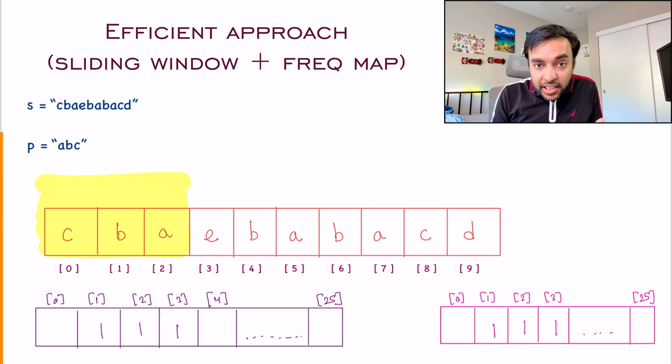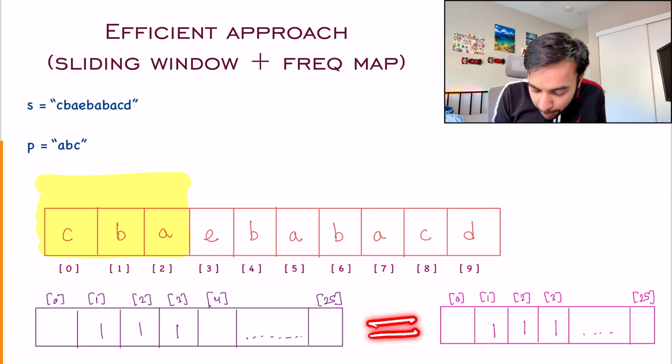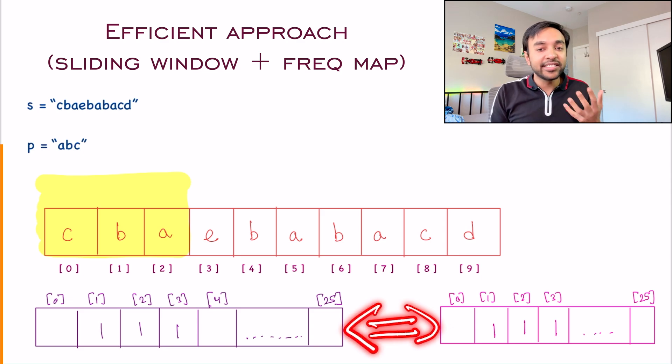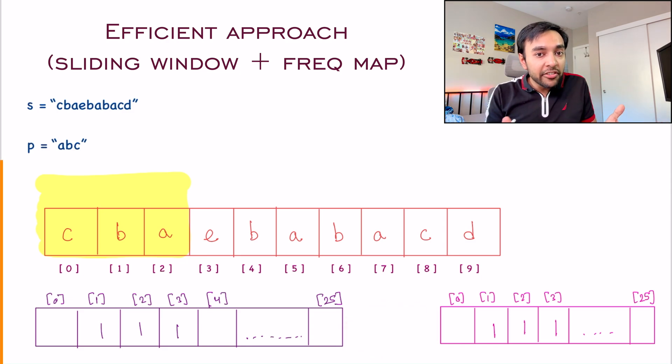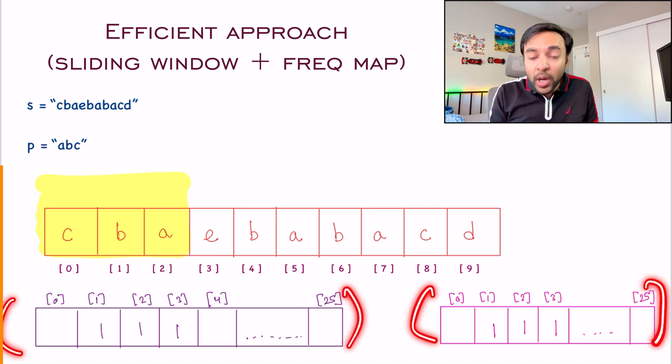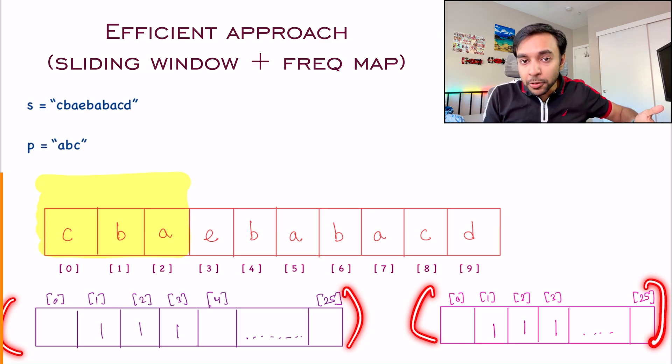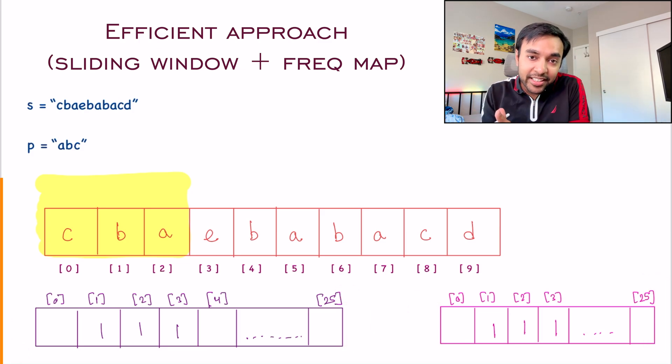So at every iteration, what do you do? You will actually compare if both of these arrays are the same. And no matter what programming language you are using, Java, Python, these programming languages have utility functions by which you can compare if two arrays are same. If you want to do it yourself also, these are just 26 characters. So it is a order of constant time. This will not grow at scale with your input size.